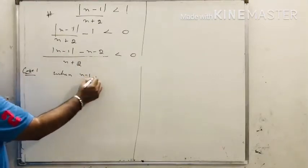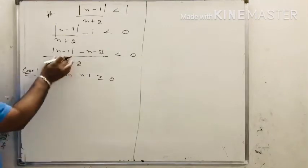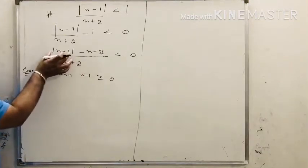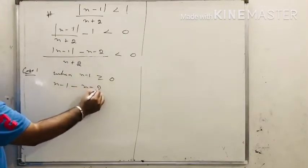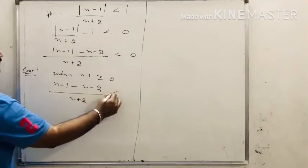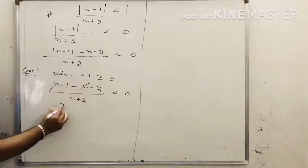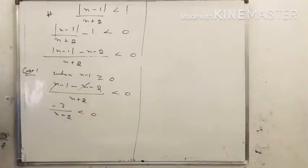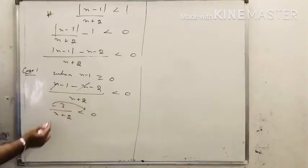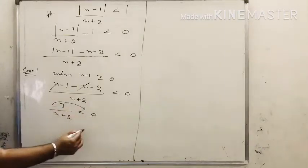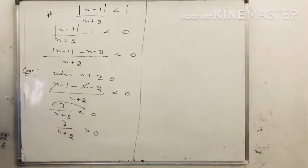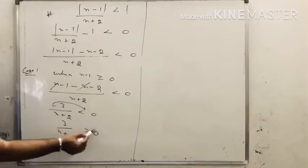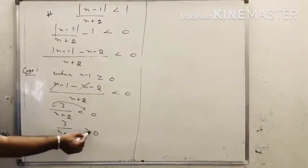Case 1: when the value inside the modulus is greater than or equals to 0, modulus x minus 1 equals x minus 1. So we get x minus 1 minus x minus 2 upon x plus 2 less than 0. The x terms cancel, leaving minus 3 upon x plus 2 less than 0. Shifting the negative side over changes the sign: 3 upon x plus 2 greater than 0.